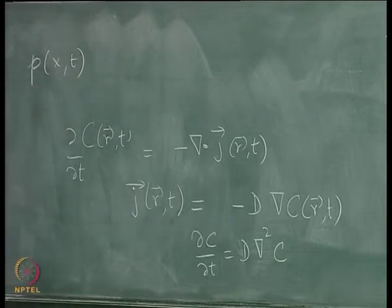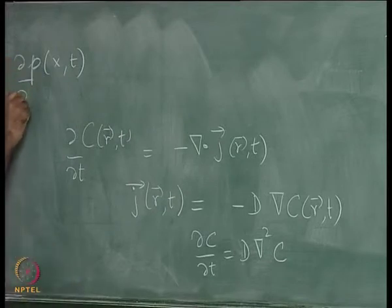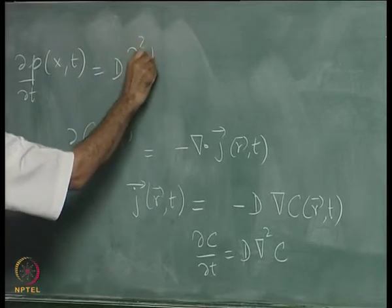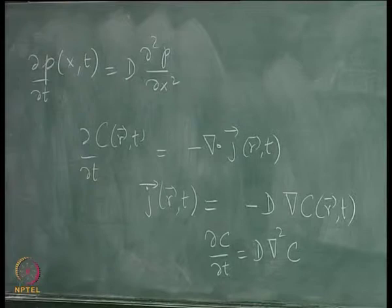The positional probability density of a single particle satisfies the same equation almost by definition: ∂p/∂t = D·∂²p/∂x². This is the diffusion equation.